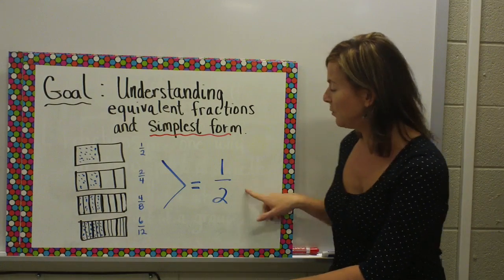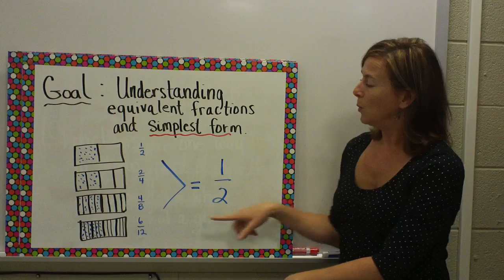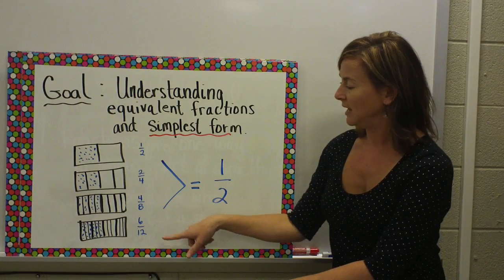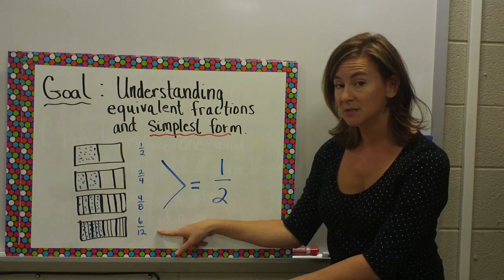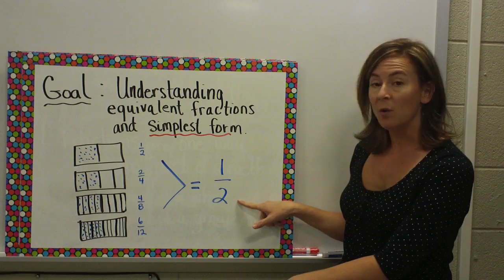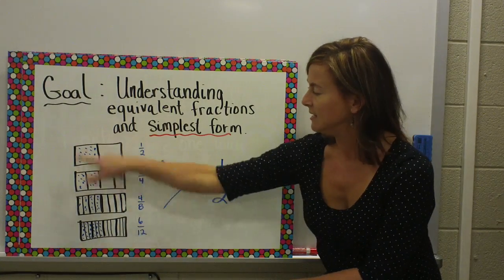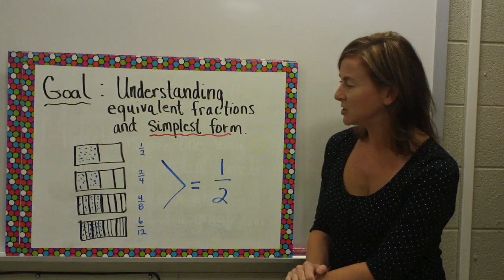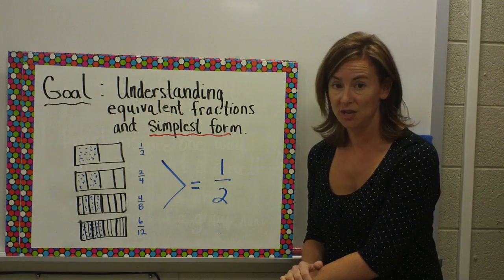All of these equal one half. When we write two fourths, four eighths, six twelfths in simplest form, it will equal one half. And you can see in my rough sketch that each picture, one half, is shaded.